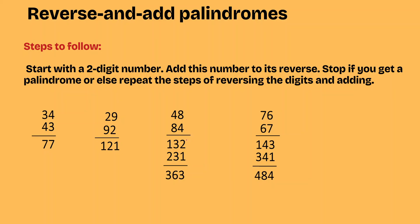Let us see the concept of reverse and addition of palindromes together. For example, let us start with a two-digit number, add the reverse of the number to it, and stop once we get a palindrome — otherwise we repeat the step until we get a palindromic number. Let us take the example 34. The reverse of 34 is 43. Adding 34 and 43, we get 77. Is 77 a palindrome? Yes, therefore we stop here.